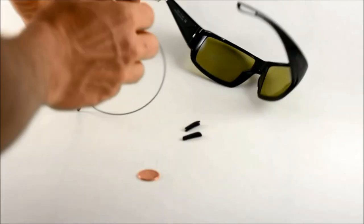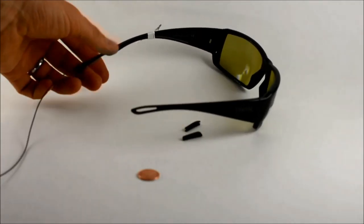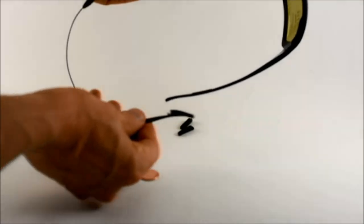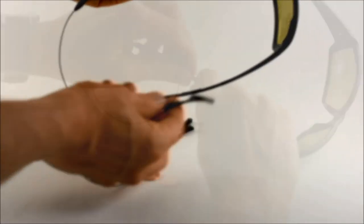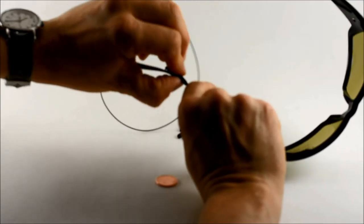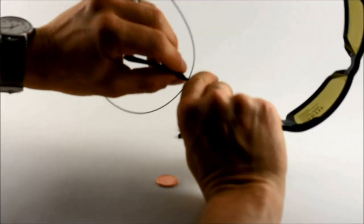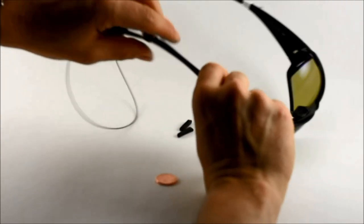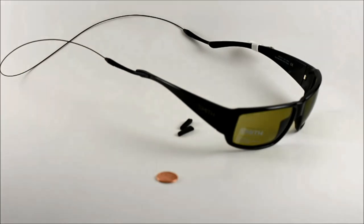Then you're going to want to do the same for the other side. Grab it and hook it like this, and then push it in. Just kind of pull that back until it's seated right on that groove. You're good to go. Saved glasses.